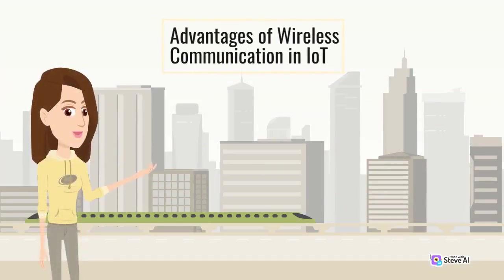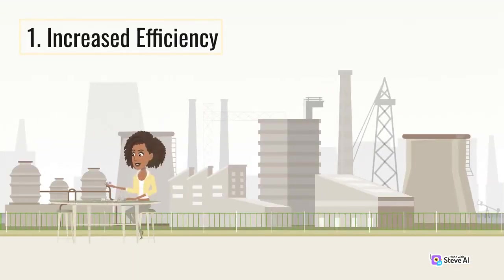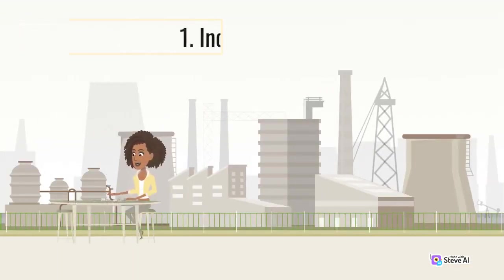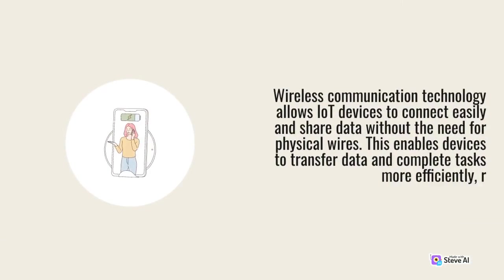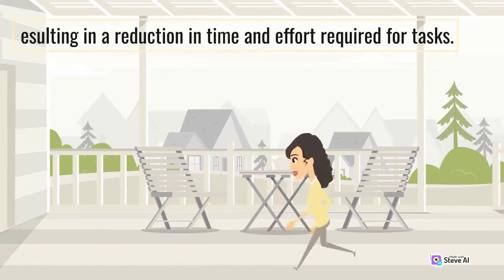Advantages of wireless communication in IoT. 1. Increased efficiency. Wireless communication technology allows IoT devices to connect easily and share data without the need for physical wires. This enables devices to transfer data and complete tasks more efficiently, resulting in a reduction in time and effort required for tasks.